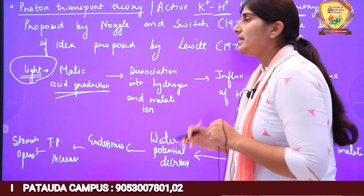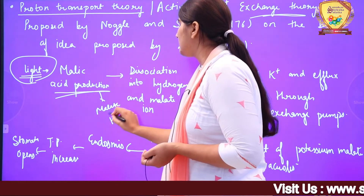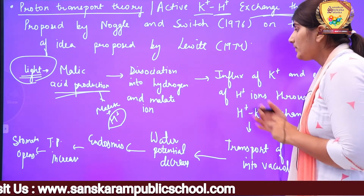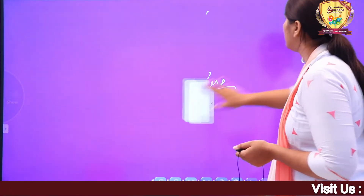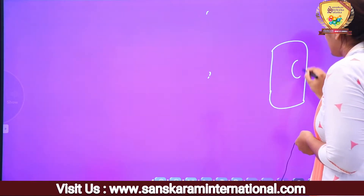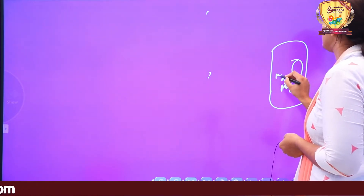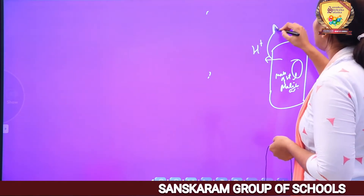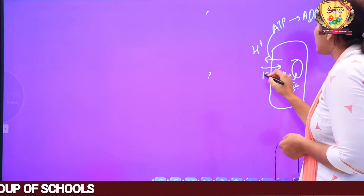Malic acid टूट जाएगा into malate ion and H+ ion। Malic acid टूटके malate ion और H+ (protons) बना लेगा। अब यह H+ ions guard cell के बाहर throw कर दिए जाएंगे। इस diagram में देखो — light में malic acid बना, malic acid टूटा malate और H+ में। यह H+ ions, cell के बाहर throw कर दिए जाएंगे by using ATP। ATP will be converted into ADP and Pi, और इनके बदले में अंदर K+ (potassium ions) को बुला लिया जाएगा। इस process में energy चाहिए।